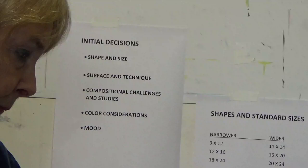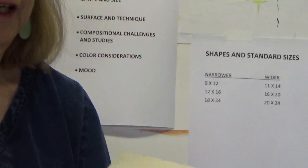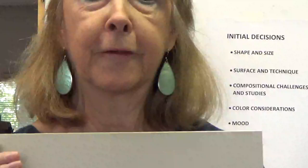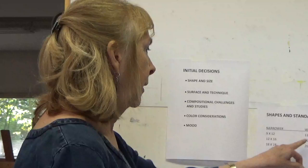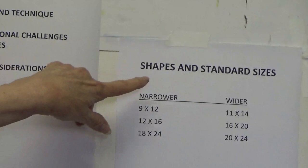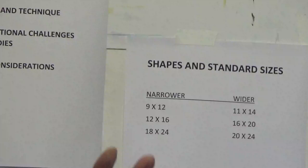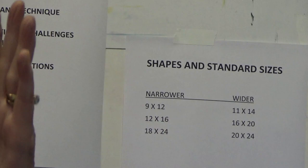Let's start by thinking about the shapes and sizes that are possible. I work in standard sizes, which are predetermined, and there are standard sizes for which you can put a painting in a plein air frame — a big advantage. I purchase pre-mounted boards from Dakota Pastels. The standard sizes I work in are from basically 11 by 14 to 20 by 24. The narrower ones are the 9 by 12, 12 by 16, and 18 by 24. The wider ones are the 11 by 14, the 16 by 20, and the 20 by 24.